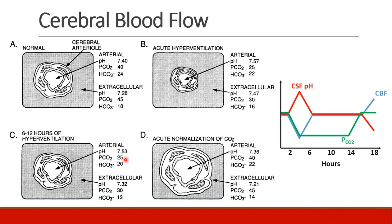So now what happens when we go back to normal ventilation? Compared to the new baseline of this brain, what you call normal ventilation is actually hypoventilation. And so these cerebral blood vessels dilate in order to try to return back to baseline.